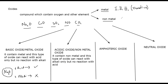For non-metals, the element belongs to group four, five, six, or seven. Group eight elements don't form oxides because they have a complete outer shell, so they are chemically unreactive and do not react.